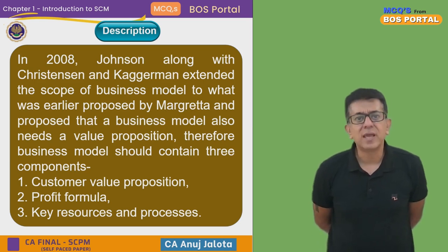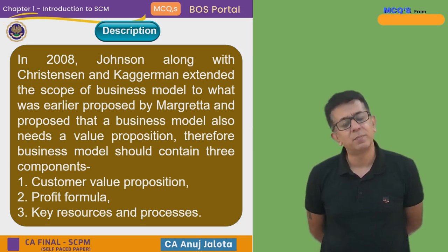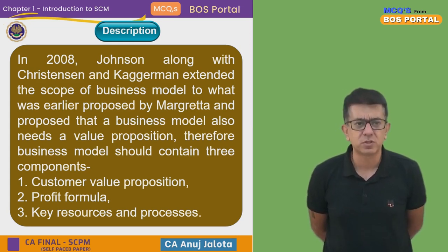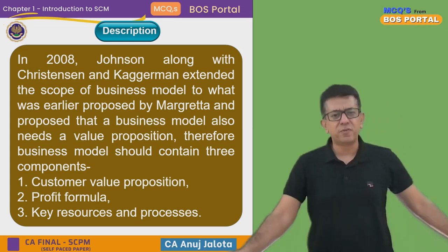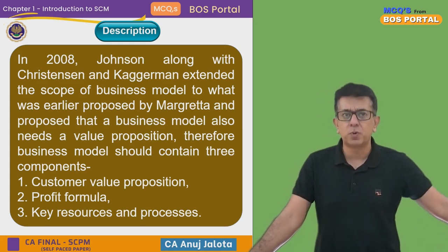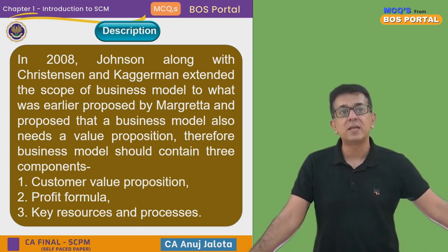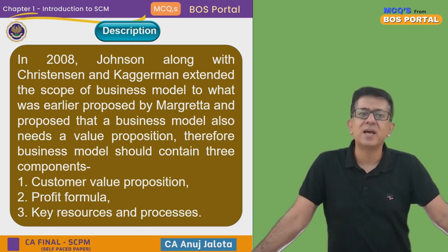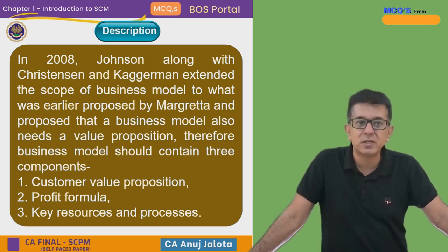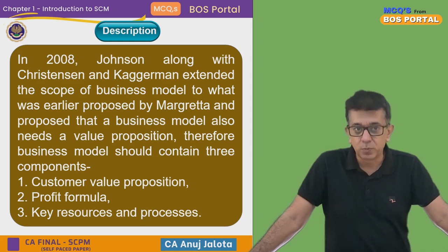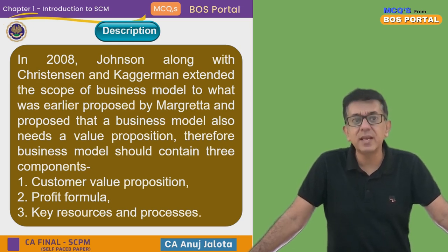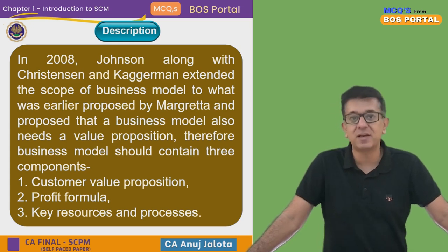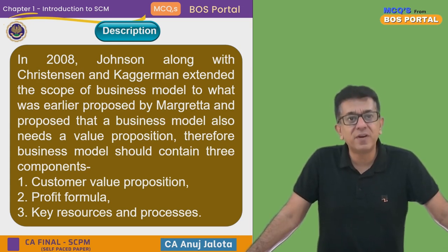There have been many business models created by many authors, but the first and most popular one was created by Johnson. He stated that a business model should have at least three things: first, customer value proposition; second, profit formula; third, key resources and processes. Impact factor is never there.